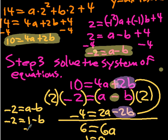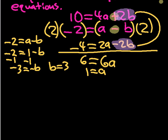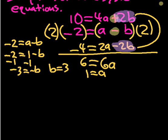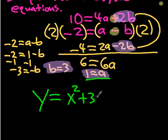Substituting a equals 1: negative 2 equals 1 minus b. Subtract 1 from both sides: negative 3 equals negative b, so b equals 3. Now I've got both a and b. I'm going to rewrite my equation: y equals x squared plus 3x plus 4. And that's it — you're done.